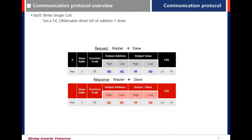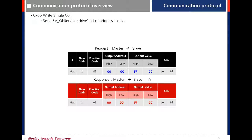Let's see the Write Single Coil command. For example, set servo on by writing: slave address is the node ID, function code 05, output address 0C — this is the servo on address, refer to the manual for addresses. Output value FF00 means bit on; 0000 means bit off.